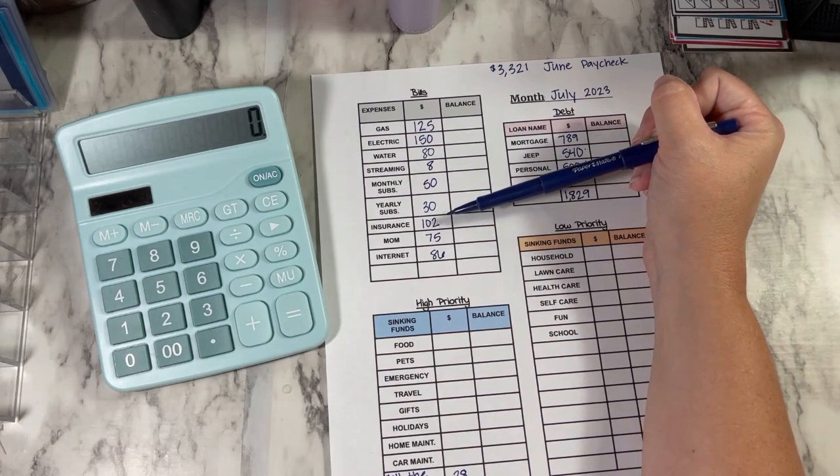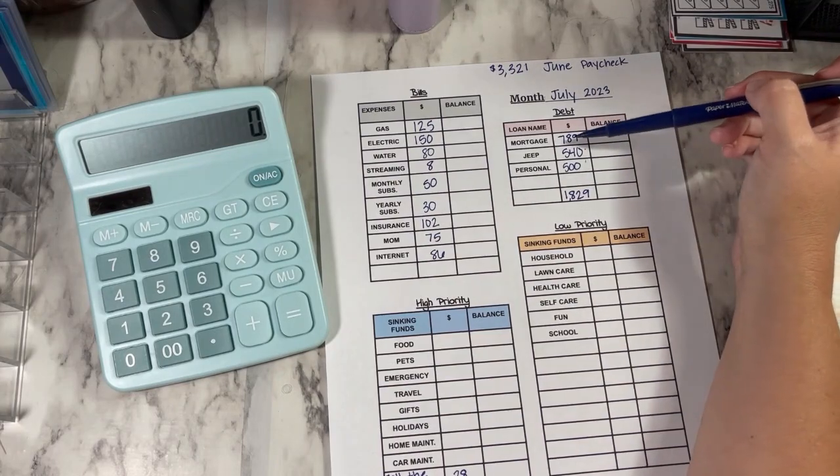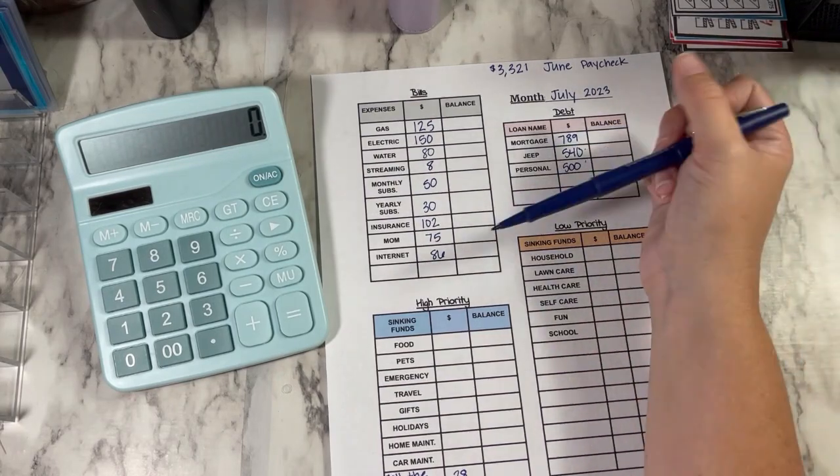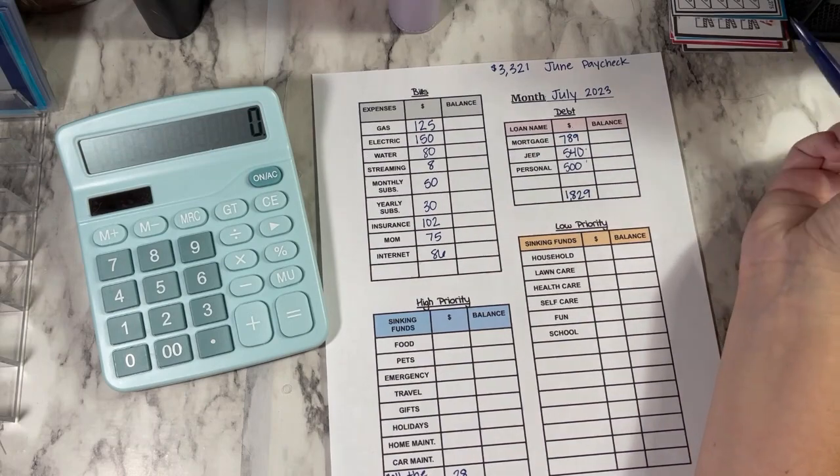Now I do round up. So like on my insurance, it's actually $101 and some change. So I just round up to the next dollar. Same with my mortgage over here and my internet, things like that.